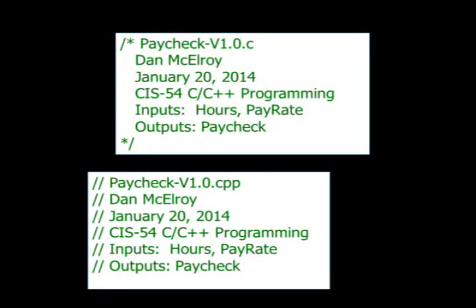Include a title block at the top of your program that identifies the name of the file, your name and date, version, and the inputs and outputs used by the program. C style comments start with /* and end with */. You can use C style comments in C++ code also. The C++ style comments start with // and stop at the end of the line — C++ style comments cannot cover multiple lines. Most modern C compilers will also accept C++ style comments.